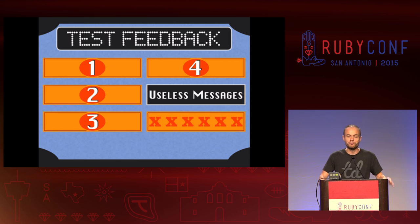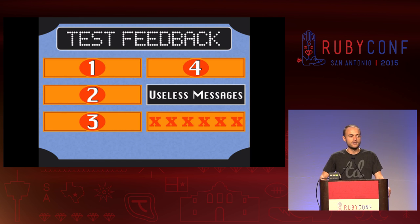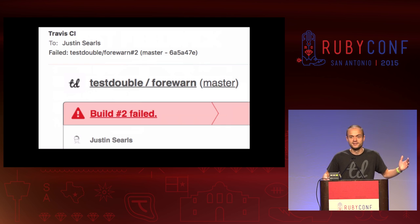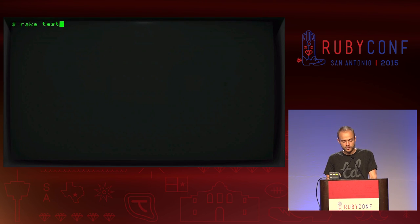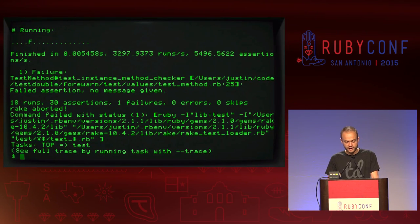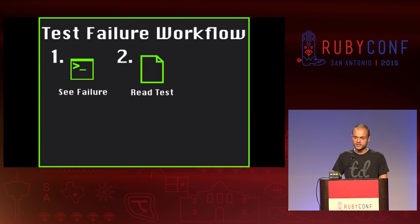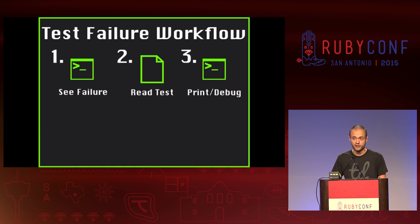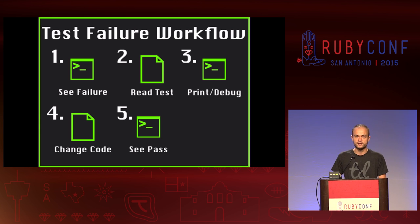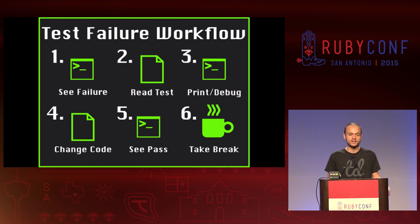We're going to talk about bad error messages. I broke the build — now what? Let's pull down this gem I wrote. This is a real gem and a real build failure. The error message: 'Failed assertion. No message given. On line 25.' What's my workflow here to fix this? I've got to see the failure, open up the test, find that line, put in a print statement or debug to figure out what the expectation was and what the actuality was, then change my code, then see it pass, then take a coffee break because it's been 20 minutes. Super wasteful every single time I see a failure in that project. Even if a test is fast, bad failure messages provide so much friction and waste that they can easily offset how fast your test suite is.